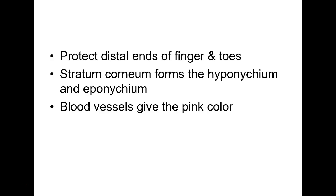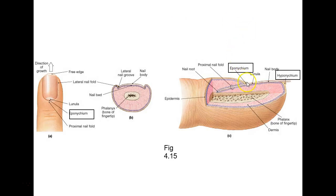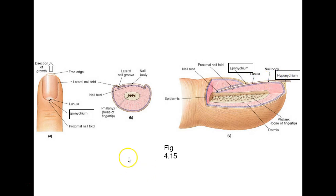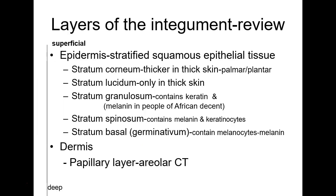Nails protect the distal ends of the fingers and toes. The stratum corneum forms the hyponychium and the eponychium. Blood vessels give nails a pink color. The eponychium is up near the cuticle; the hyponychium is the little skin underneath — if you get a splinter there it really hurts. The lunula is the little half-moon-shaped pale area, visible especially on the thumb. As long as the nail bed cells aren't damaged, a ripped-off nail will grow back.